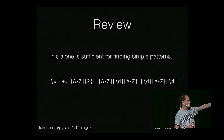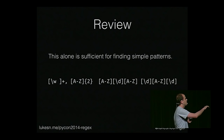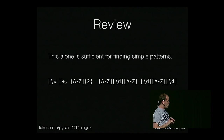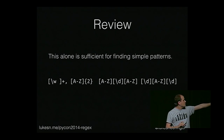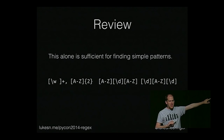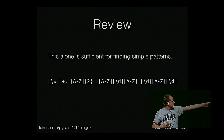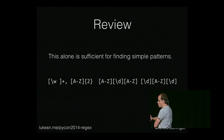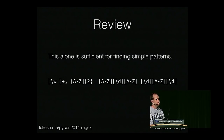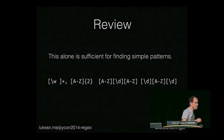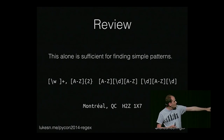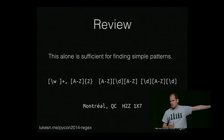Here's an example: a pattern with an arbitrary number of word characters or spaces, one or more, followed by a literal comma, followed by two capital letter characters, followed by two physical spaces, followed by a letter, a number, a letter, space, a number, a letter, a number. Can anyone tell me what this is trying to match? It is a Canadian postal code. So this is Montreal, Quebec, H2Z 1X7, which is the postal code we're in right now.